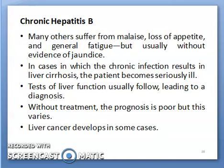Hepatitis B is a worldwide disease, but there is a significant difference in clinical expression between areas of high and low prevalence. In high-prevalence areas like Asian countries, HBV infection tends to be acquired around the time of birth — perinatal — from infected mothers. As a consequence, the immune system does not recognize a difference between the virus and the host, and a high level of immunologic tolerance ensues. Because of this tolerance, the infection is not accompanied by acute hepatitis; instead, a chronic, usually lifelong infection is established.